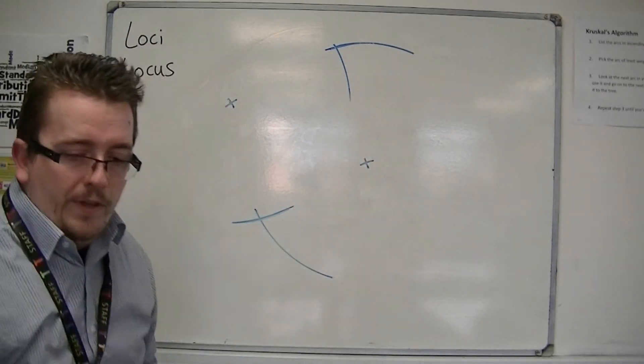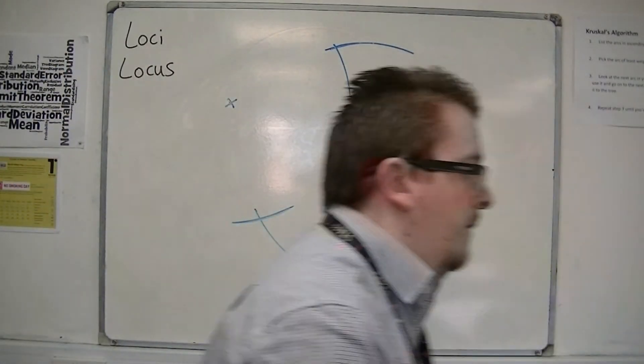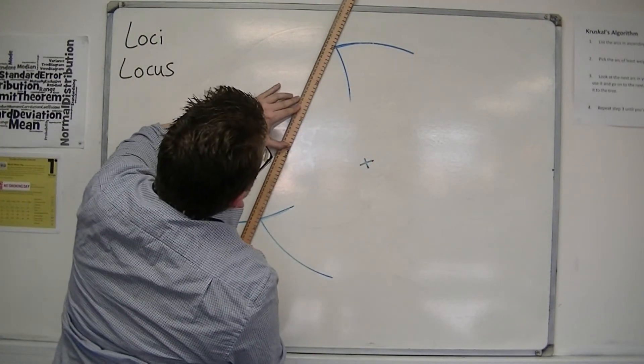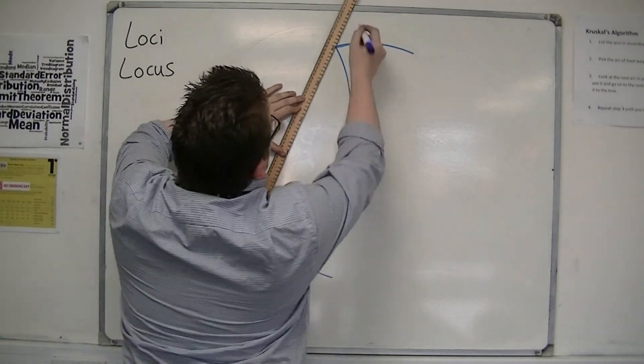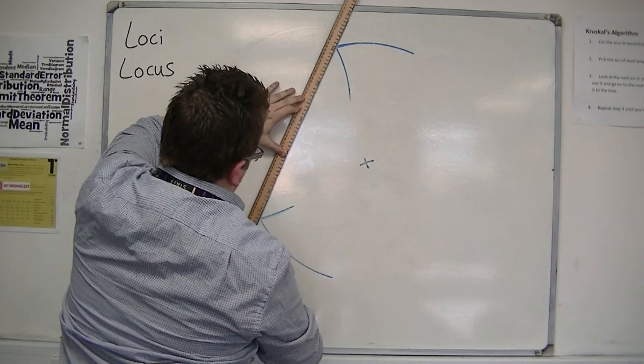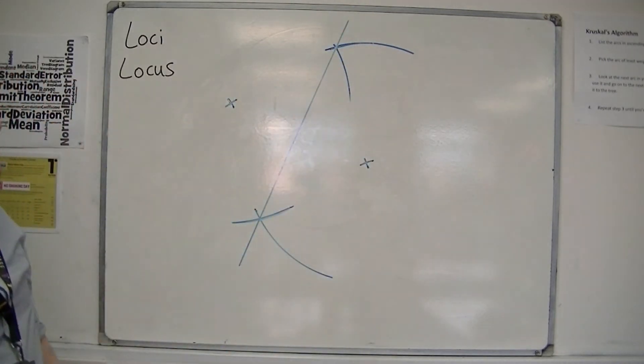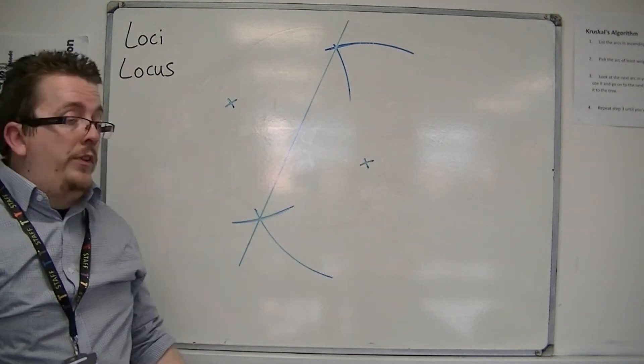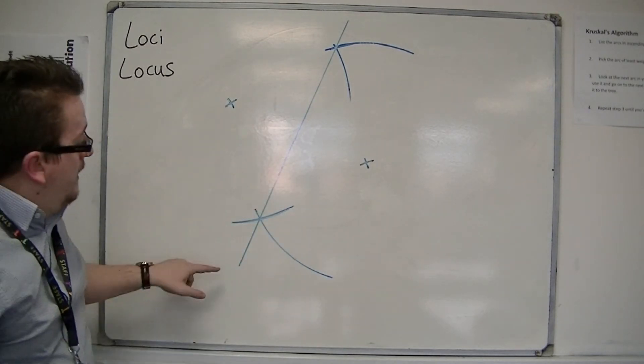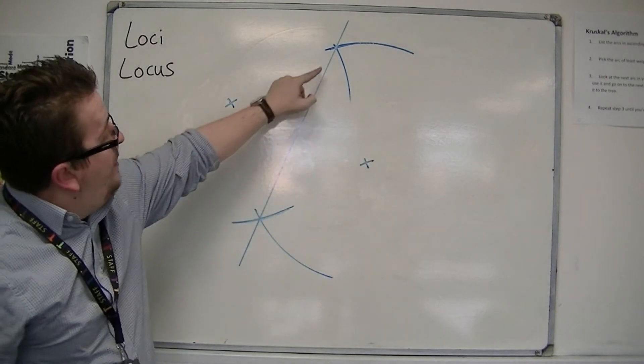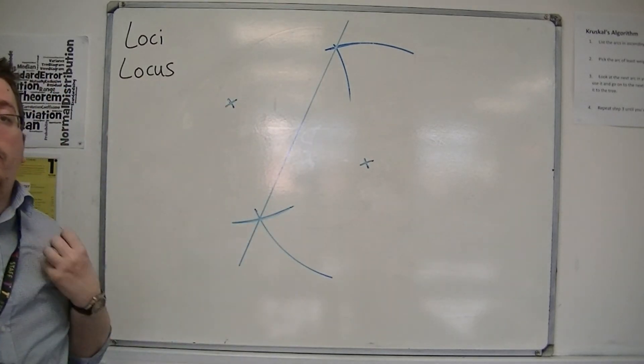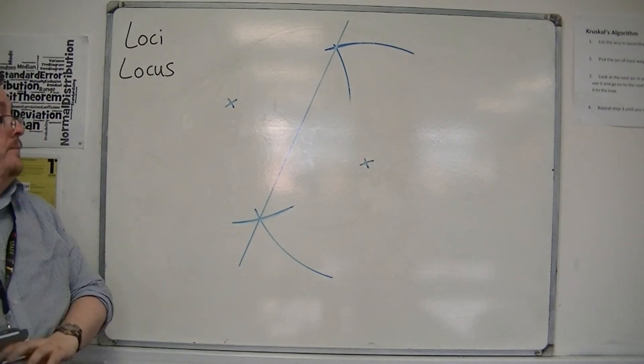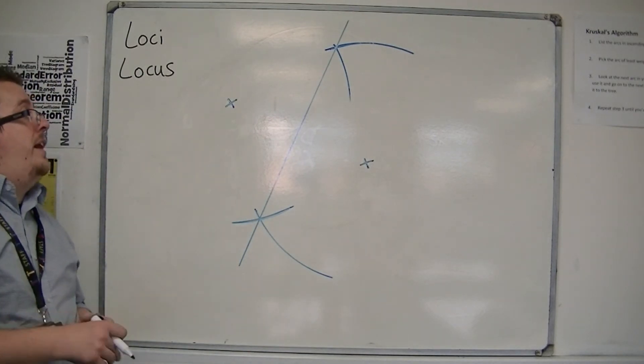Draw those crosses in. So as long as you've made sure that the compasses haven't changed in size, drawing a line through your two crosses will draw you a locus between the two points. And wherever you stand on this line, you are exactly the same distance from both points.